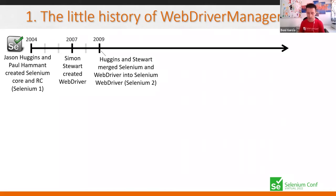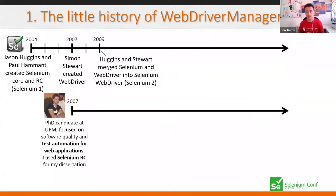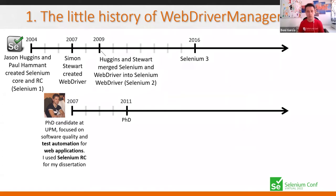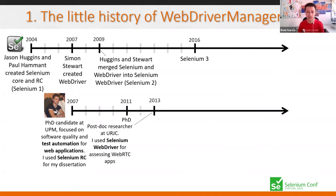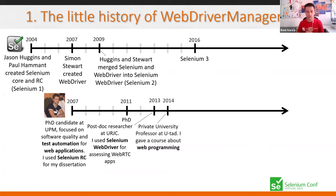My history is that in 2007 I started my PhD focused on software quality and automation, and I was a user of Selenium Remote Control at that time — I used it for assessing web applications as part of my PhD dissertation. Selenium continued evolving; we had to wait until 2015 for Selenium 3. In 2013 I joined another university as a postdoc researcher and started using Selenium WebDriver for assessing WebRTC applications. In 2014 was an important day — I had my first contract as a professor at a private university.